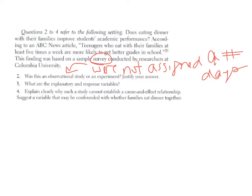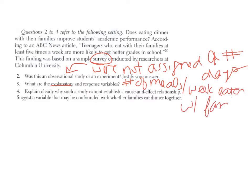Looking at the explanatory versus response variables in the claim being made: the explanatory variable is the number of meals per week eaten with the family, and what they're trying to determine is whether that impacts GPA — so the response variable is the students' GPA. The study cannot establish cause and effect because there are other variables that are going to impact GPA; the number of meals together is not the only thing affecting GPA, and we can't hold everything constant for every family.